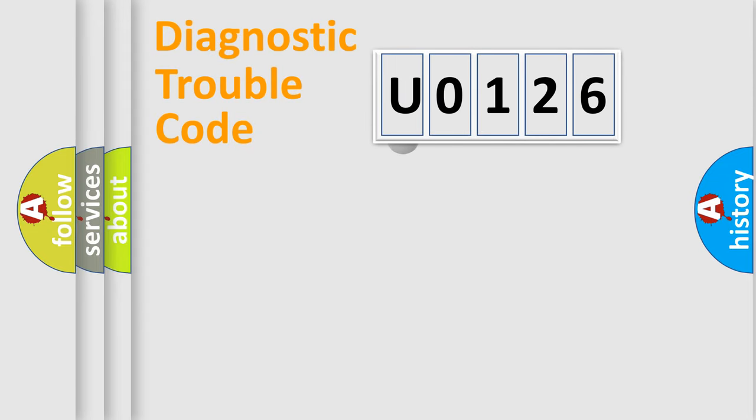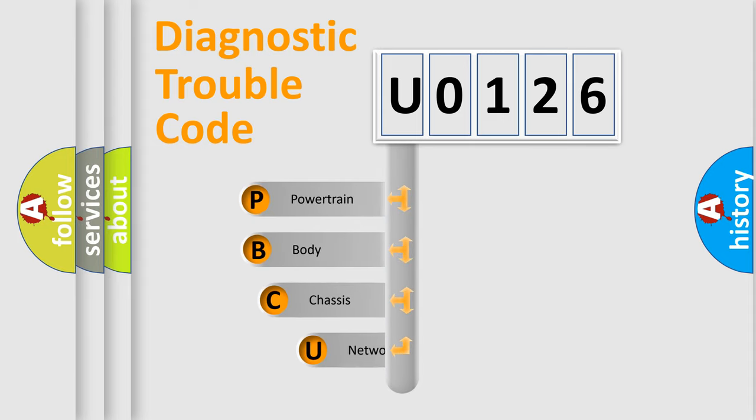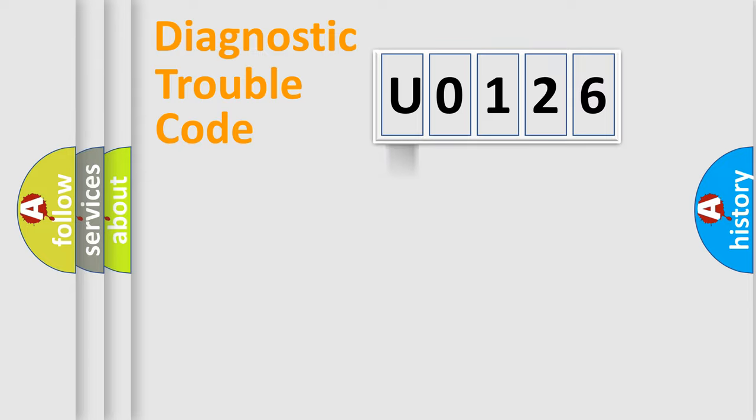First, let's look at the history of diagnostic fault code composition according to the OBD2 protocol, which is unified for all automakers since 2000. We divide the electric system of automobile into four basic units: powertrain, body, chassis, and network. This distribution is defined in the first character code.